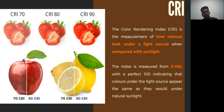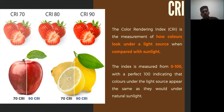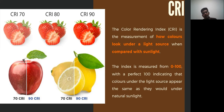CRA (Color Rendering Index) is how accurately your light renders the true color of a subject. Generally, CRA should be in the range of 80–95 or 97. The benchmark of 100 is the CRA of sunlight.